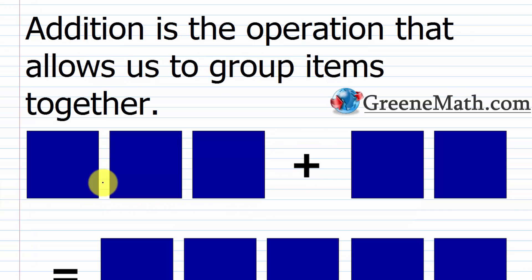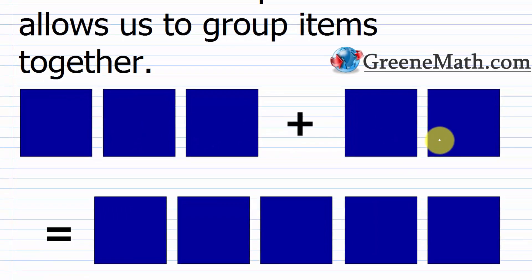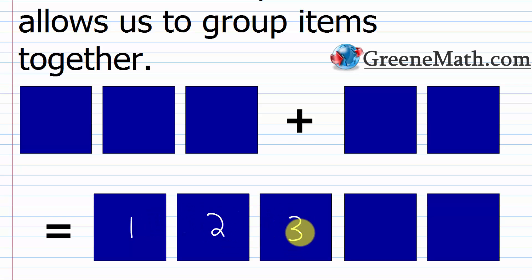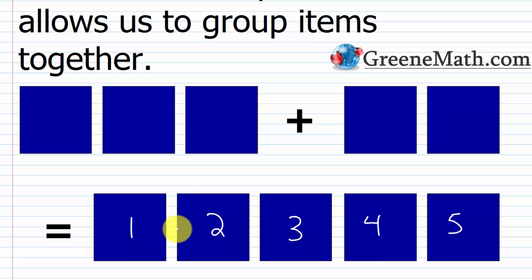Let's begin the lesson by thinking about what addition actually is. Addition is the operation that allows us to group items together. In a simple way — the way you might think about it in grammar school — we have a picture with three boxes and we're adding two more boxes. We can count how many boxes we have total.